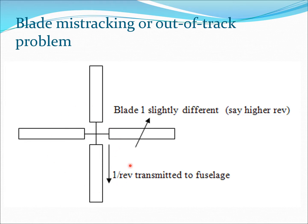For example, consider a four-bladed rotor where one blade is slightly different from the remaining three — maybe its mass and stiffness properties have changed slightly over time or due to damage. This produces a one-per-rev vibration transmitted to the fuselage, which is quite a nuisance. One common remedy is to keep the blades in track by applying tuning masses or using trim tabs to make all blades as similar as possible, thereby mitigating the one-per-rev vibration as much as possible.